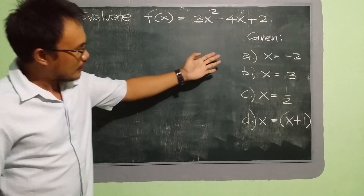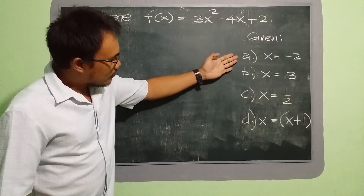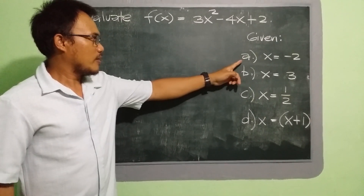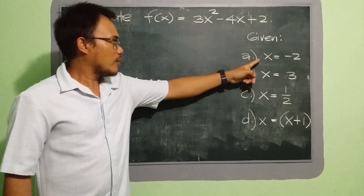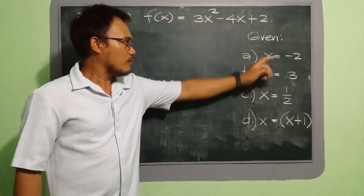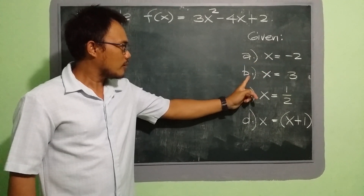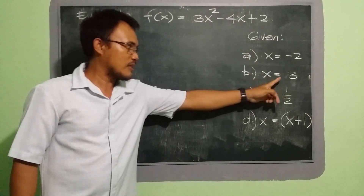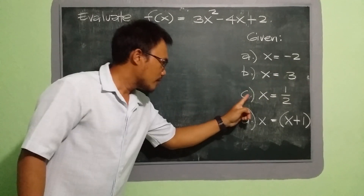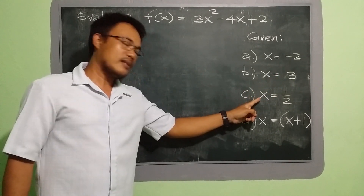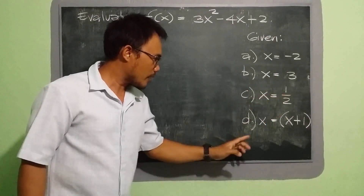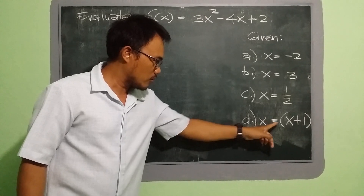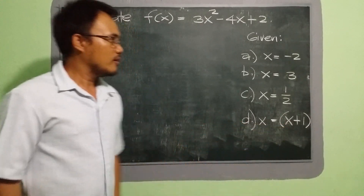With the following given values of x: letter a, the given value of x is negative 2; letter b, the given value of x is 3; letter c is x equal to 1 half; and letter d, we have x equal to the quantity x plus 1.